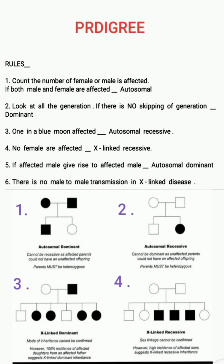Rule number five: if an affected male gives rise to an affected male, then it is autosomal dominant. Rule number six: if there is no male-to-male transmission, that is X-linked disease — specifically X-linked dominant.